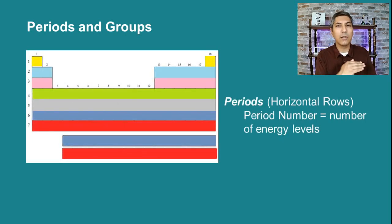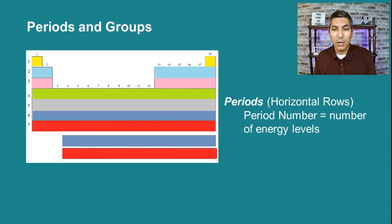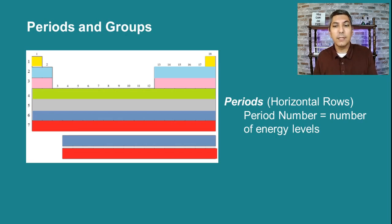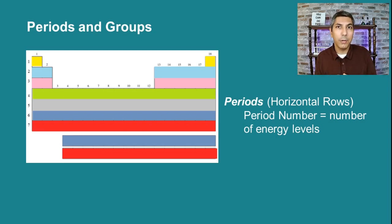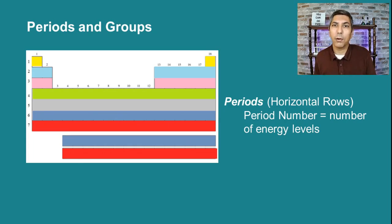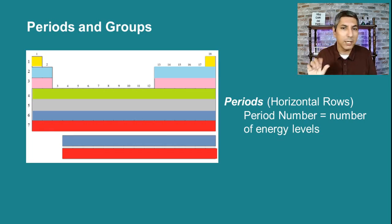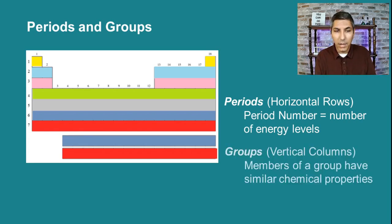The periods are the horizontal rows in the periodic table. On our modern periodic table there are seven periods. Something interesting about the period number is that it tells us the number of energy levels that atom is going to have. For example, magnesium is in period three on the periodic table, so it has three energy levels. Strontium — Sr on the table — is in period five, so it has five energy levels of electrons.